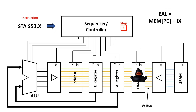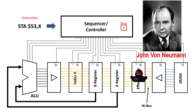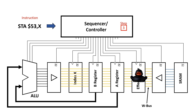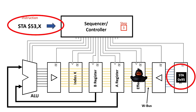Once you understand that, you might be thinking: where does this instruction come from? Well, for a von Neumann architecture like the SAP1 and 6502, all of the instructions are stored in main memory. Which begs the question: how do the instructions get from main memory to the sequencer controller?